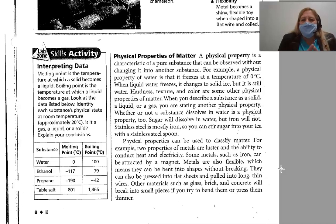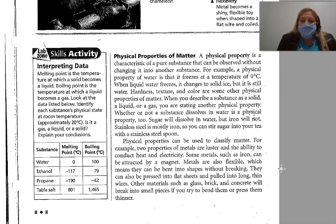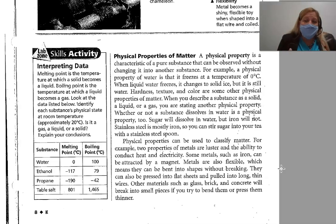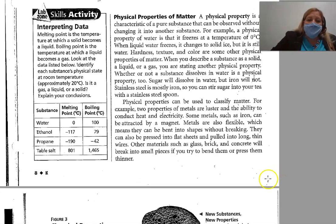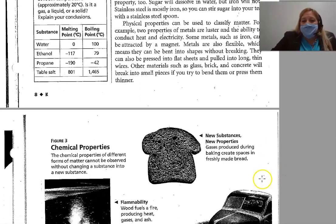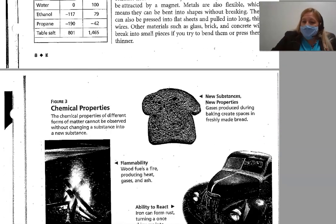A physical property means that the appearance may change, but it's still the exact same thing. Water, for example — if you freeze it, it's solid, but it's still water. Metal — you can form it into a ring, but it's still metal. Nothing has changed inside it. So physical properties means the physical shape may change, but nothing on the inside changes.